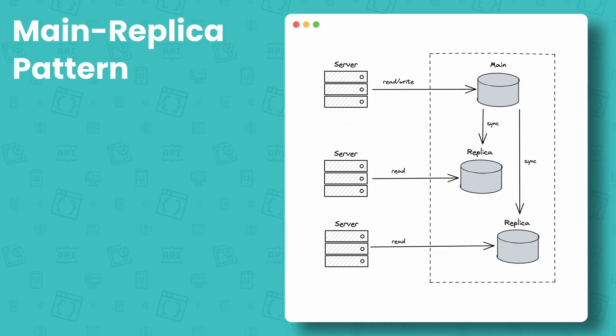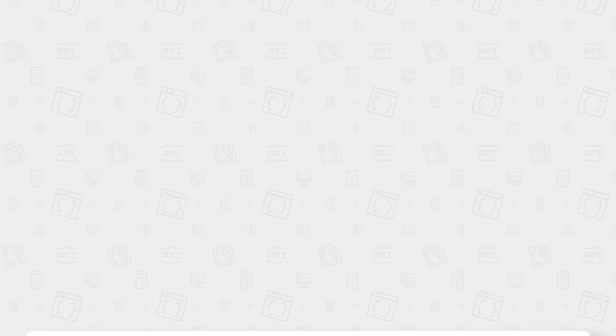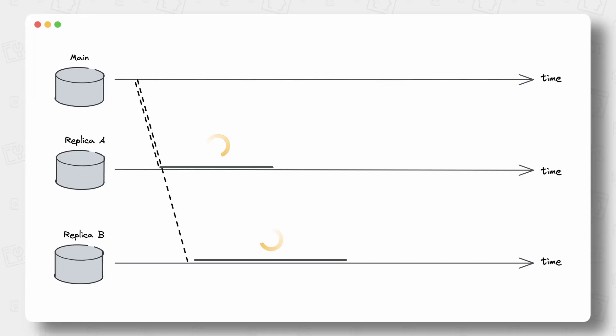At GitHub, they not just heavily rely on relational databases. They also go with the classic main replica pattern, where write requests go to a single node called main and all the other nodes are called replicas. They simply replay the main's changes. This happens asynchronously, and that means the changes made to the main are not immediately reflected on replicas. Each replica pulls the changes from its main and replays them as fast as it can. If you're looking for a fancy term for your system design interview to describe this behavior, call it eventual consistency.